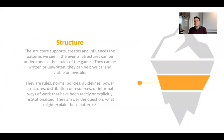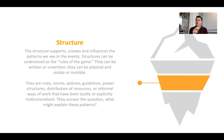What does change systems is going down here to the bottom of the iceberg — the structures. Structures can be understood as the rules of the game. They can be written or unwritten, physical and visible, or invisible. For example, visiting a city: that city has a structure, and you're going to have to follow it. There are streets and a transport infrastructure, and you'll probably end up at some centralized location because of the structure of the transport system already in place. That's a physical systemic structure, but there are many others: norms, policies, guidelines, power structures, distribution of resources, or informal ways of working that have been tacitly or explicitly institutionalized.